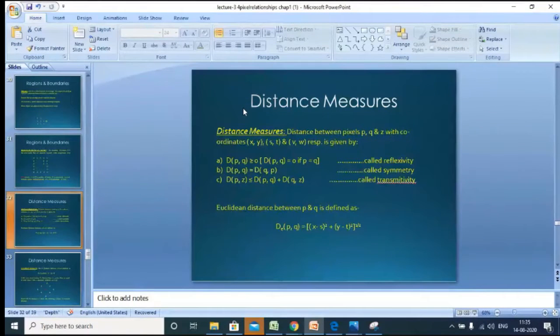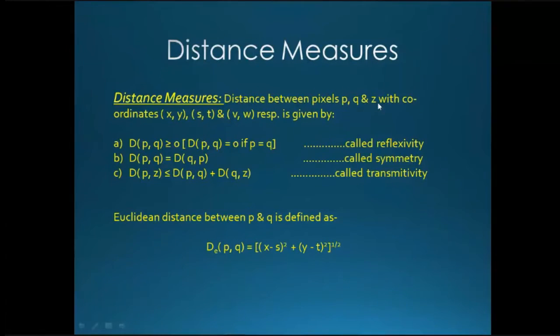Now, distance measure. Distance measure is, we are going to measure the distance between the pixels p, q and z with coordinates x, y, s, t, v, w respectively. So these are the three conditions we have for distance measure. What is the condition? Just we can read it now.